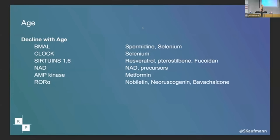I'm sure everyone here is on an NAD precursor or something — I poo-poo the infusions, but you do need to do NAD somehow. AMPK — metformin is the easy one, but a million things activate it. ROR alpha is the one that I bet no one here is worried about augmenting yet, and this is a key one.